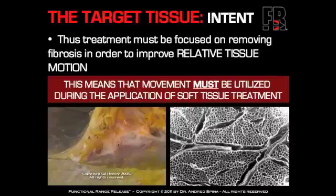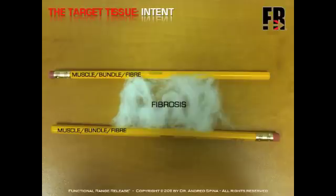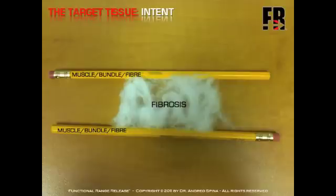Here's a simple example using a pencil and some cotton wool. One pencil represents a muscle bundle or muscle fiber; another pencil represents a different muscle, bundle, or fiber. Between these two bundles we have fibrosis, represented by cotton — a pretty accurate representation of what fibrosis looks like. Let's call this abnormal fibrosis: an increased density of scar tissue beyond what's normal between muscles or bundles.